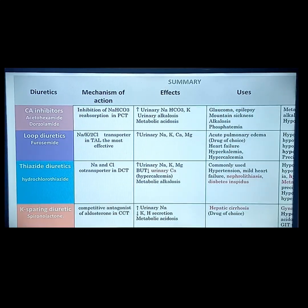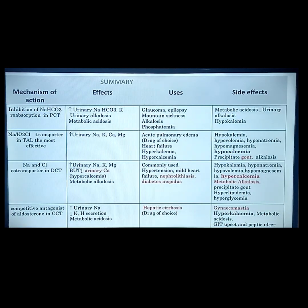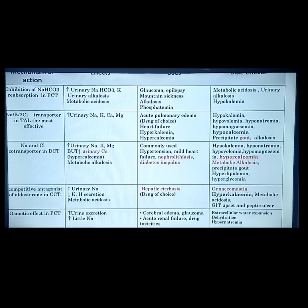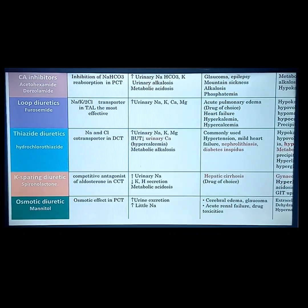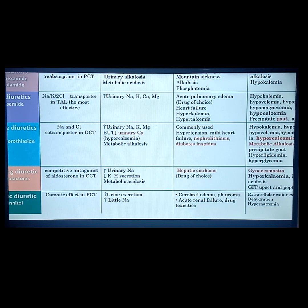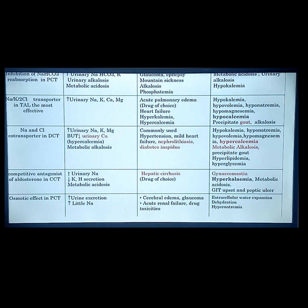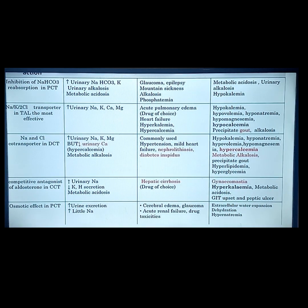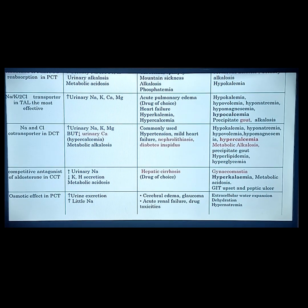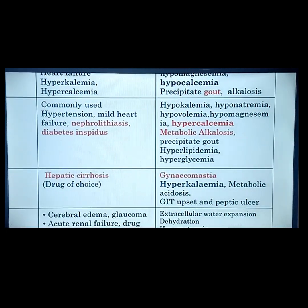For thiazide: it inhibits sodium chloride transport in the distal convoluted tubule — retains calcium, but increases urinary excretion of sodium, potassium, and magnesium. Used for hypertension, heart failure, nephrolithiasis, and diabetes insipidus. Side effects include hypercalcemia and metabolic alkalosis. For potassium-sparing: retains potassium while excreting others; used for hepatic cirrhosis or liver conditions that develop ascites. Gynecomastia, specifically with spironolactone — if this develops, switch to other drugs.